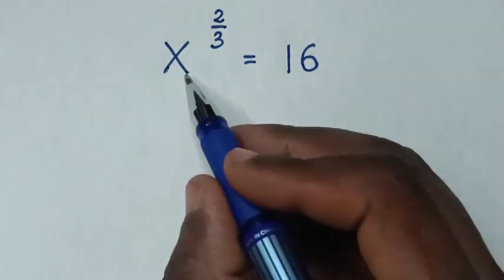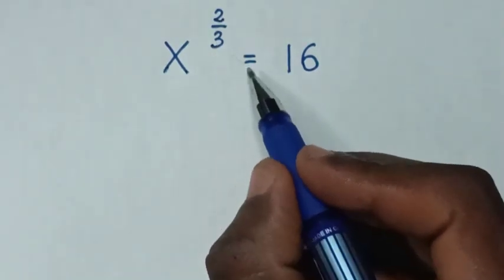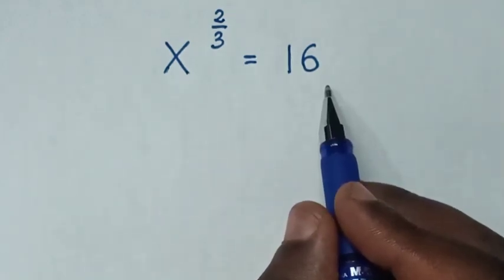Hello, how to solve x to the power of 2 over 3 equals 16 to find the value of x from this equation.